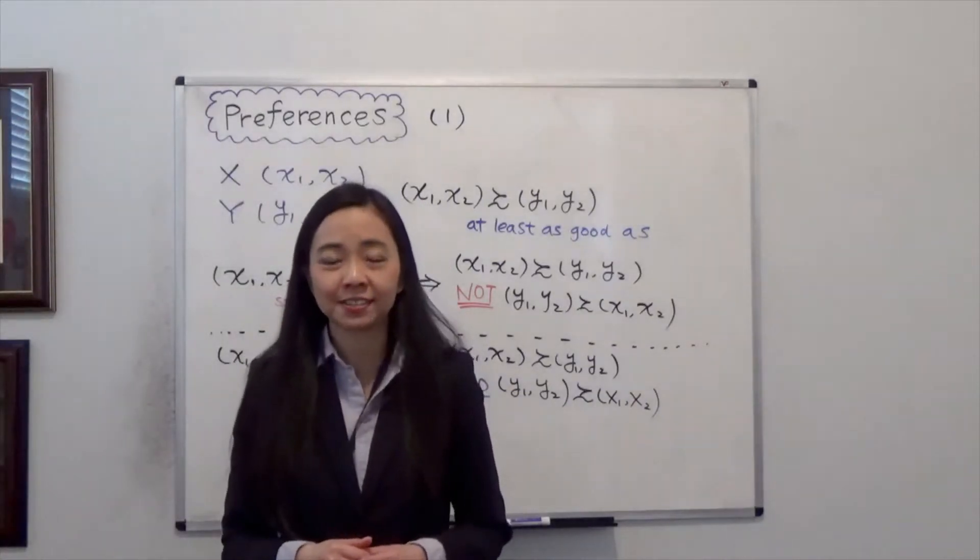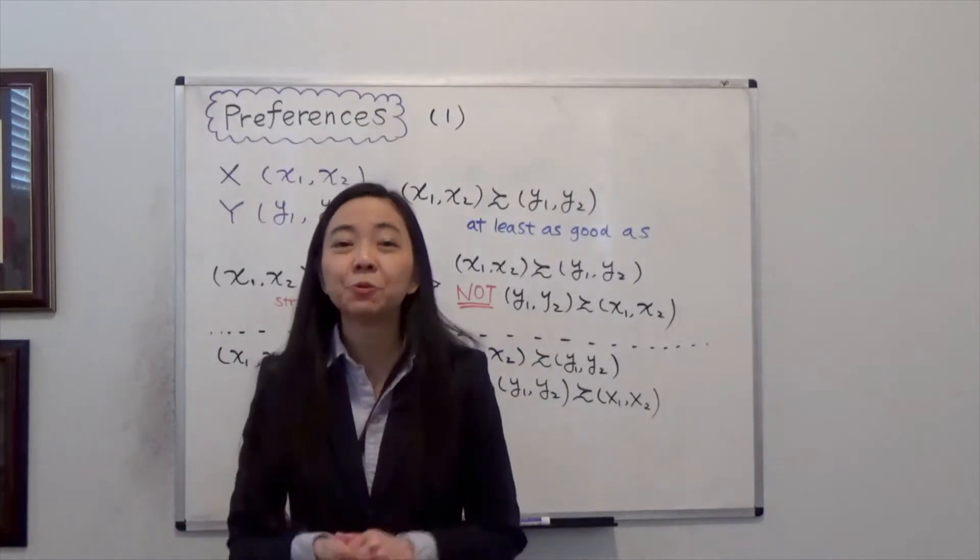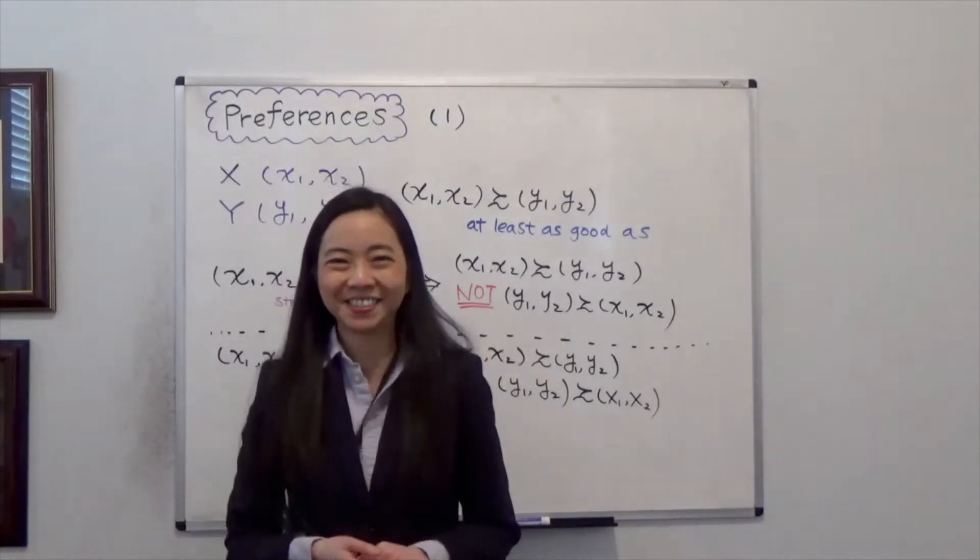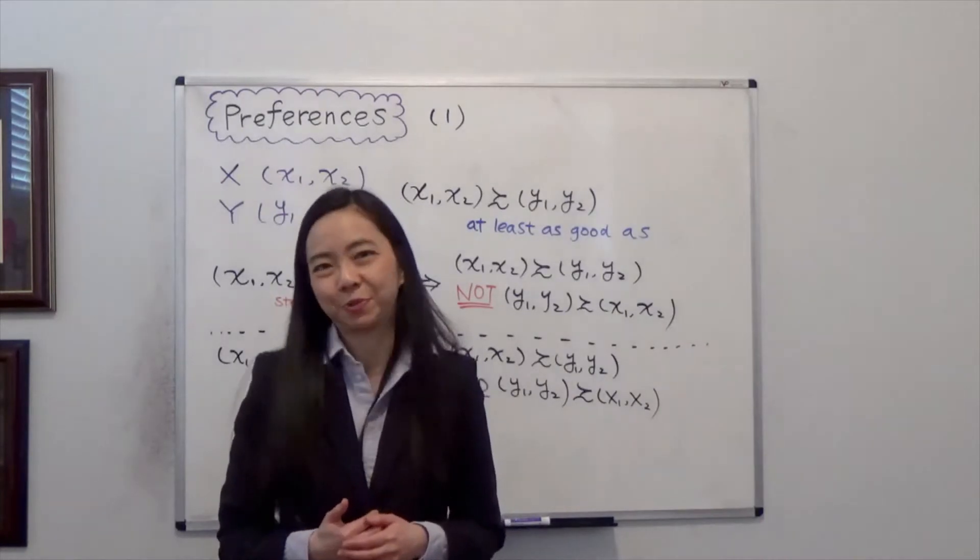Hello everyone, my name is Iris Franz with Johnny One Room. Today we're going to talk about preferences. For your reference, I'm using Variance Book Chapter 3.